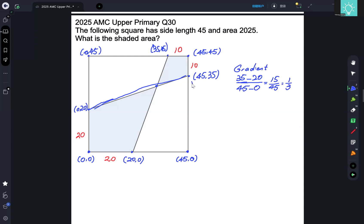So this line here, we can write this as y is equal to a third of x plus some constant. Now, when x equals 0, y is equal to 20. So this constant must be 20. So this is the equation of this line over here.